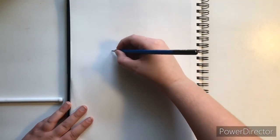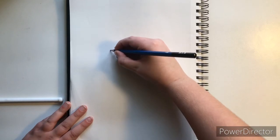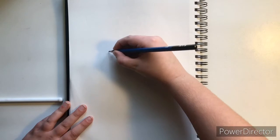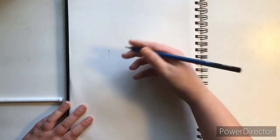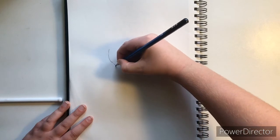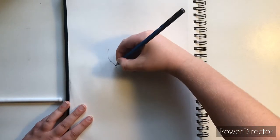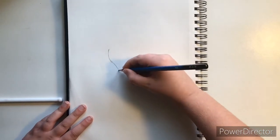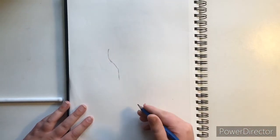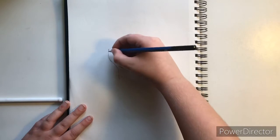First what you're gonna do is go about right here and go around like a squiggly line. Then you can go down like down here, so that's like the back of the body and part of the leg.